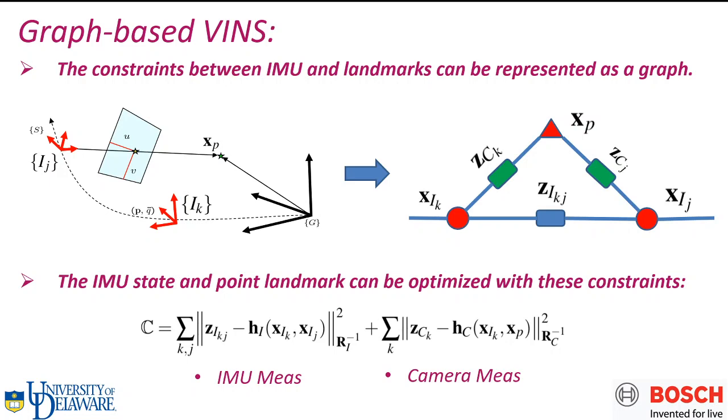Before we go to the paper, we first give a brief introduction of graph-based VINS. When the VINS system is exploring the environment, it will generate the IMU motion constraints between the frame IK to IJ. Also, at frame IJ, it will observe the landmarks XP with image pixel U and V. This will generate the visual constraints. All these constraints can be represented in the graph. The red dots represent IMU states, connected by IMU motion constraints. The triangles represent the landmarks. The landmarks can be connected to the IMU states by the visual constraints.